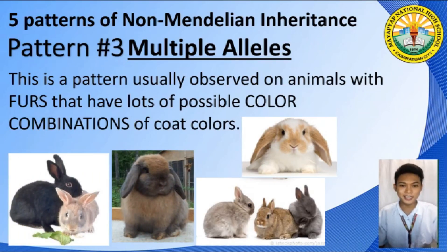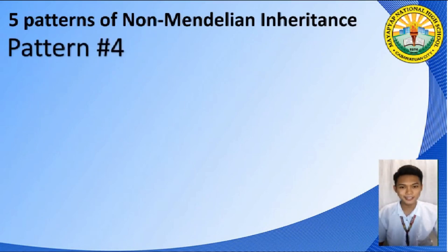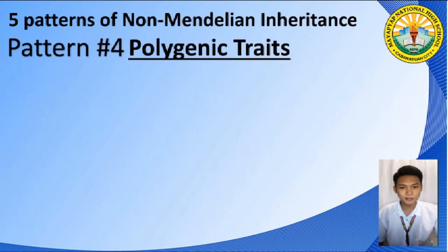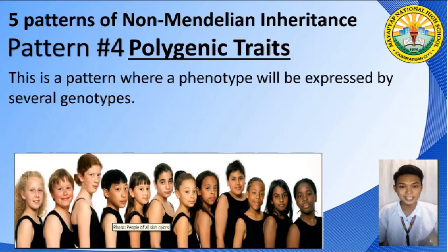What animals can you think of that can have multiple alleles in their coats? Pattern number four is called Polygenic Traits. This is a pattern where a phenotype will be expressed by several genotypes. Earlier, we discussed that a phenotype is expressed by a single pair of genes. But in Polygenic Traits, that is not the case.